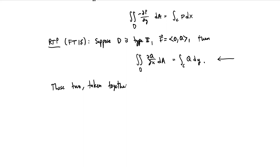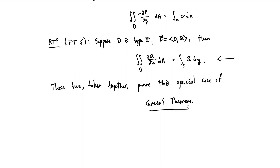These two identities, taken together, prove the special case of Green's theorem. We are now going to go ahead and use Green's theorem in more complicated situations, where this proof doesn't necessarily cover it. But in a later course, if you go on in math and continue, you will prove this theorem in a more general case and see the beauty of it once again.